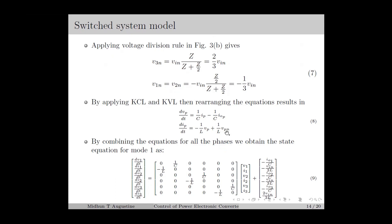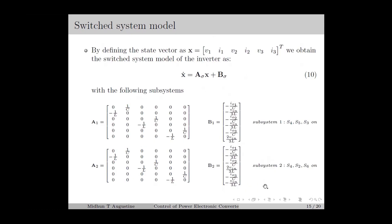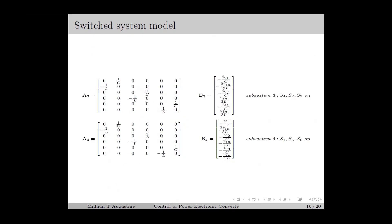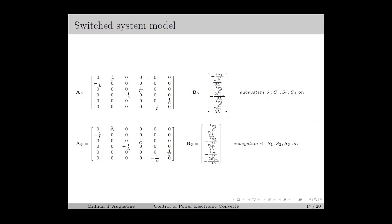For phases 1 and 2, we have Vpn equal to minus 1/3 Vin, so this term becomes minus Vin over 3L. And for phase 3, we have Vpn equal to 2/3 Vin, so this term becomes 2Vin over 3L. In a similar way, we can derive the state equations for the other modes as well. By defining the state vector, we obtain the switched system model of the inverter as in equation number 10, with 6 subsystems. Note that for each subsystem, only the B matrix changes — it changes with the phase voltage Vpn.